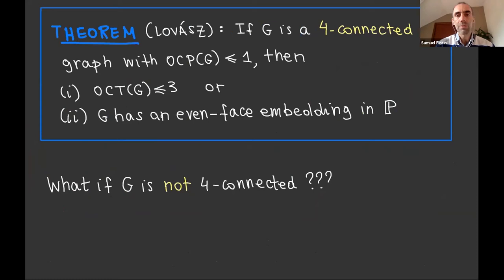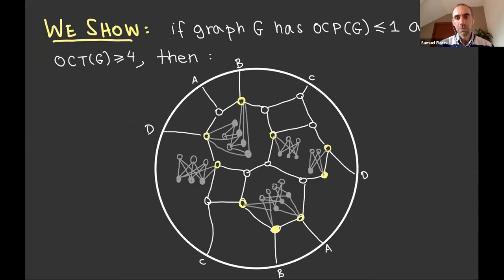Okay. So Lovasz showed that if a graph is sufficiently connected, say four connected, and has no two disjoint odd cycles, then either you have a small transversal. So you can remove at most three vertices to make the graph bipartite, right? Or the graph has an even face embedding in P. So it's a generalized Escher wall if you want. Okay. So this doesn't really tell us what happens when the graph is not four connected. So you will have to glue together these basic examples.